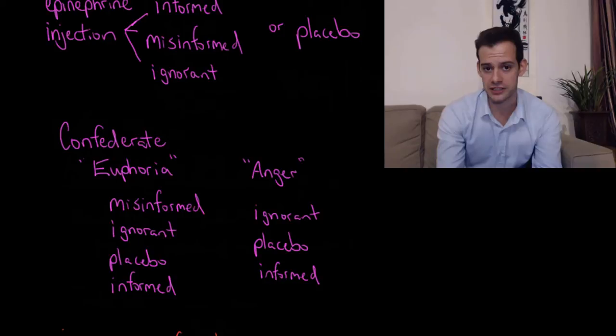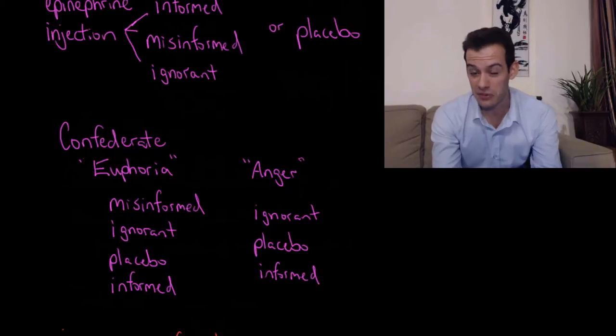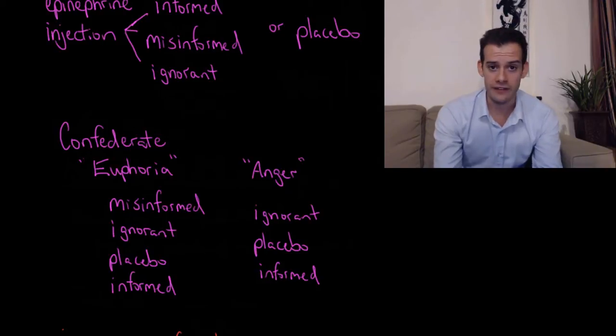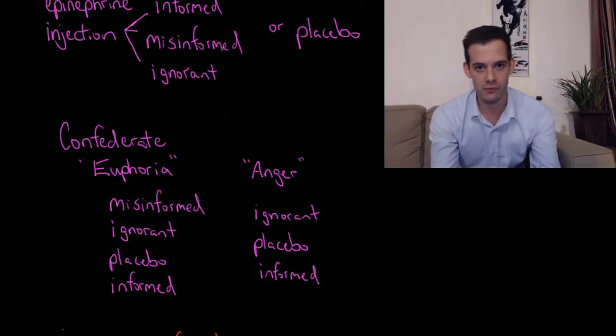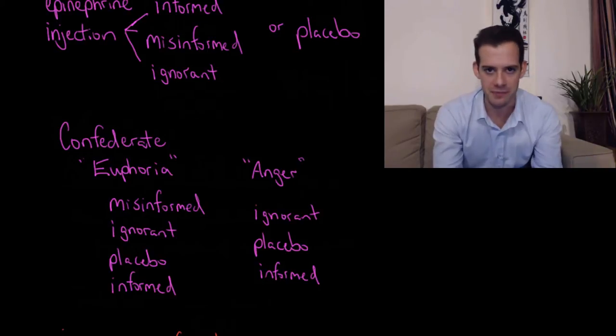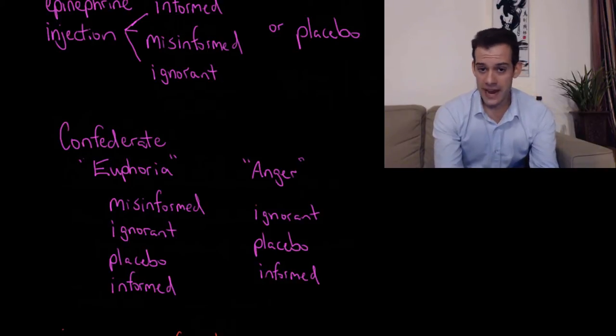The other condition is that some participants interacted with the confederate who was angry. There were some personal questions on these forms like asking how often do you have sexual intercourse each week, things like this that were fairly personal. What's your father's income? Questions like this. As a result, this confederate acts angry. He starts muttering about these questions and 'they have no right to ask this.' Eventually he gets more and more angry and he rips up the paper. The idea was that based on their interpretation of this situation and based on their knowledge about the injection they had gotten, would these participants respond differently?